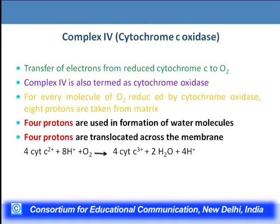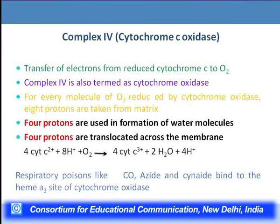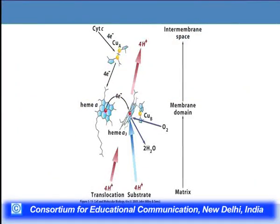The overall reaction for complex 4 is: 4 cytochrome C²⁺ + 8 H⁺ + O₂ → 4 cytochrome C³⁺ + 2 H₂O + 4 H⁺ pumped outside. Electron transfer in cytochrome C oxidase occurs one at a time: from cytochrome C to CuA, then to heme A, heme A3, and CuB. The enzyme has 13 subunits and, overall, transfer of 4 electrons is accompanied by translocation of 4 H⁺ from matrix to outside and combination of 4 H⁺ with O₂ to give 2 water molecules.